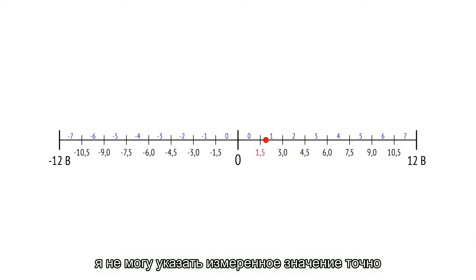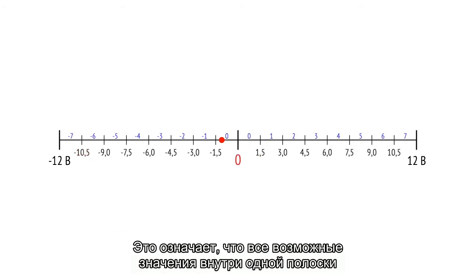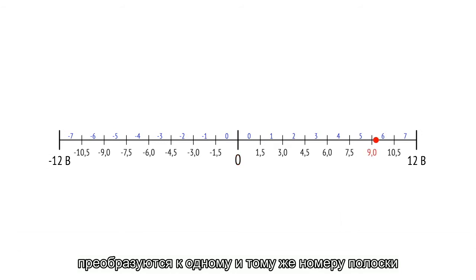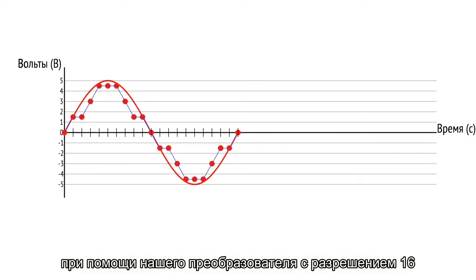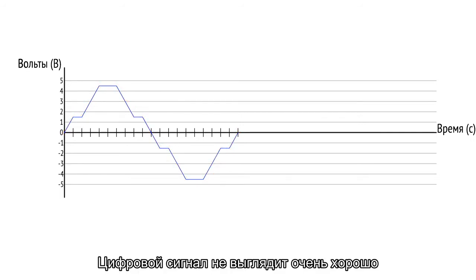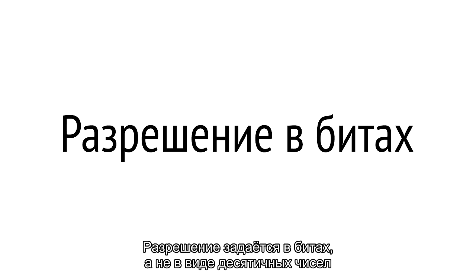This example shows that inside one stripe I am not able to distinguish the real measured value — we just know it is inside that stripe. All possible values inside one stripe are converted to the same stripe number. This shows a pure sine wave converted to digital form by a converter with resolution 16. The digital signal doesn't look very good; it is the consequence of very wide stripes. With higher resolution, we get a better digital signal.